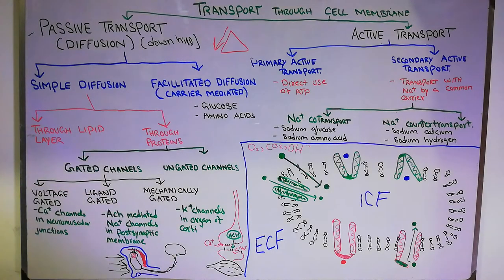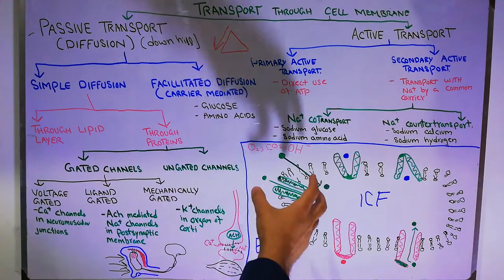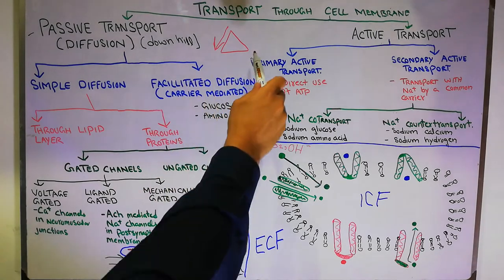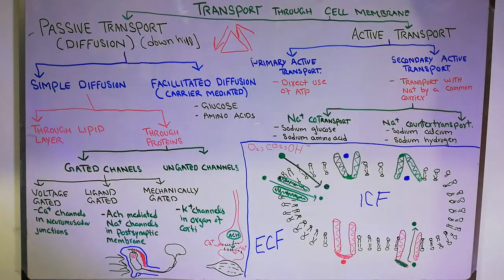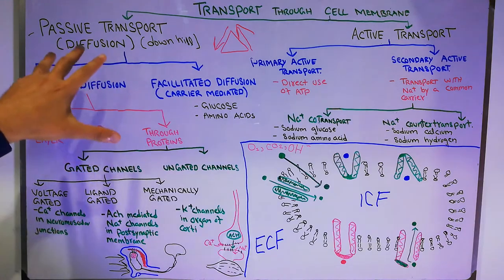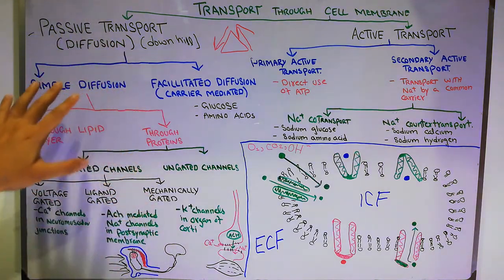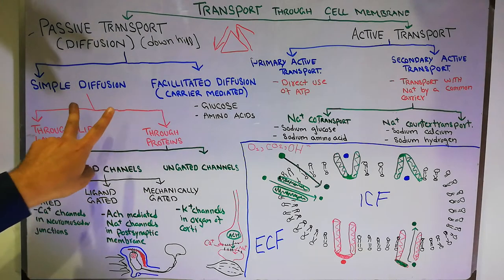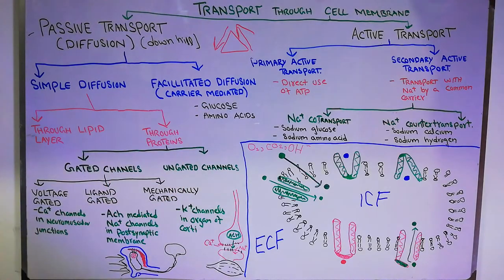In active transport, energy is required to pull something into the cell or push something outside — that's why it is called uphill transport, like going up toward the top of a hill. In this lecture we will classify the different types of transport, then in coming lectures we will go into the details. Passive transport is further divided into two main types: simple diffusion and facilitated diffusion.